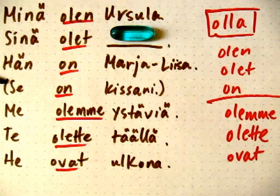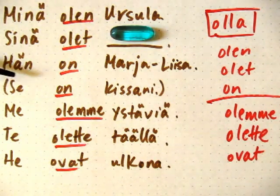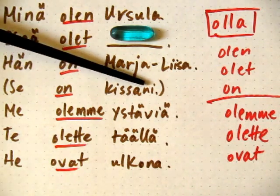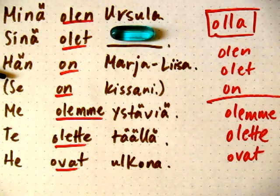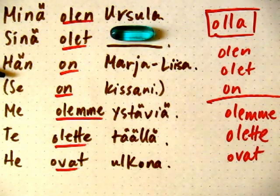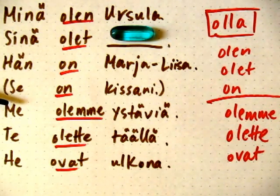Next we have se, which is used for animals. Se on kissani — it is my cat. As a hint, we have a possessive suffix here, and I will get to that in a subsequent video. Se is also used in spoken language — se on mun äiti. It just means that if I'm familiar with somebody, I can indeed say se in spoken language. When in doubt, use hän, however.